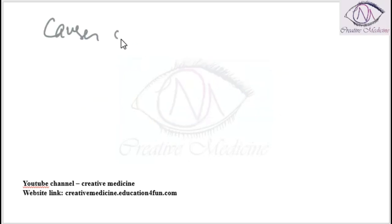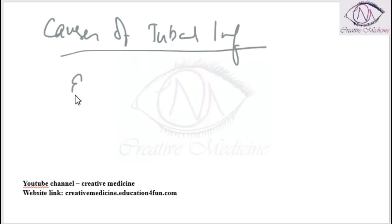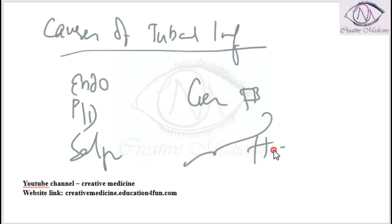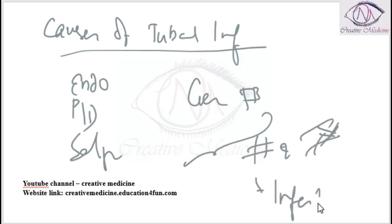Tubal infertility causes include endometriosis, pelvic inflammatory disease, salpingitis, and genital tuberculosis. All these causes block and cause adhesion in the tube, leading to infertility. This is tubal infertility.